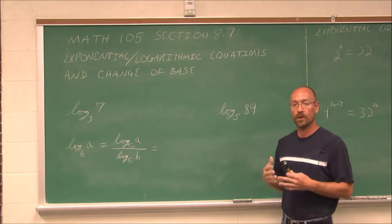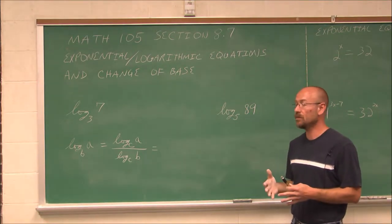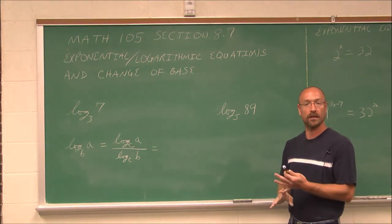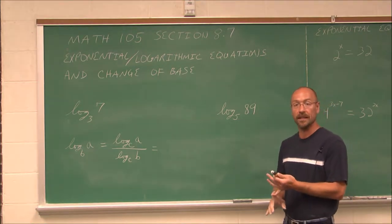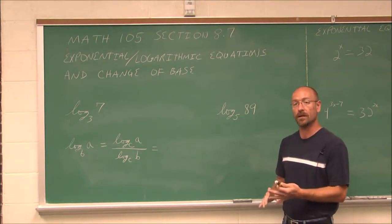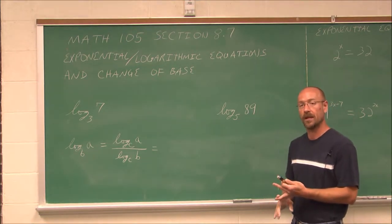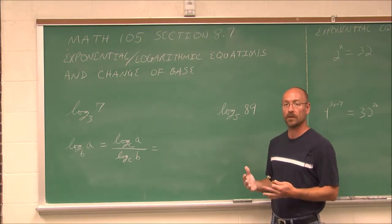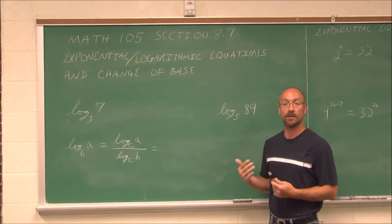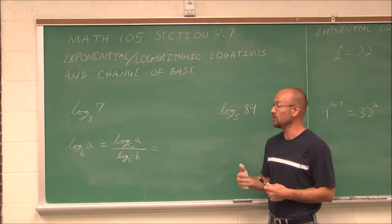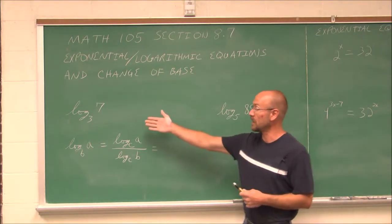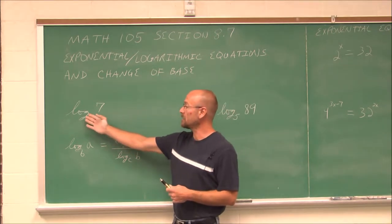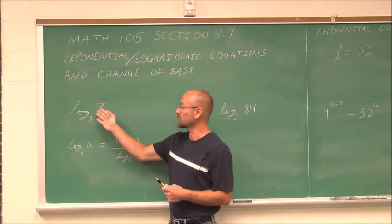We've seen in the previous section that we can take log of base e — the natural log — and log of base 10 with our calculators. But what if we're working with logarithms that have different bases? Maybe like base 3: how would I take log base 3 of 7?